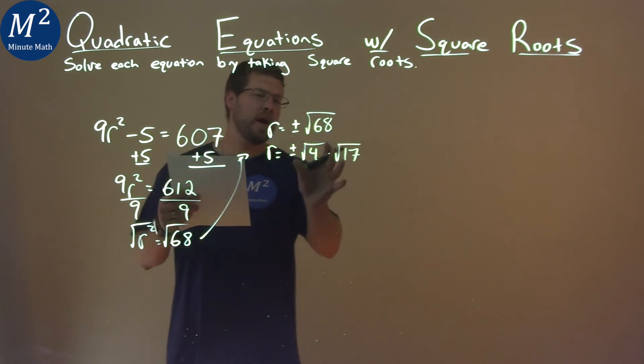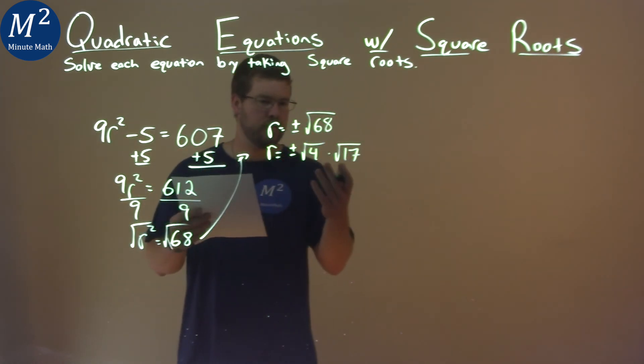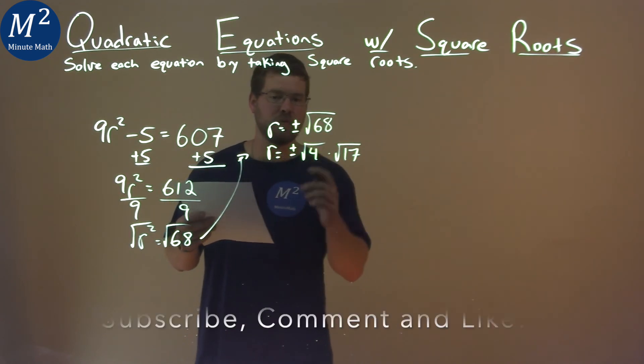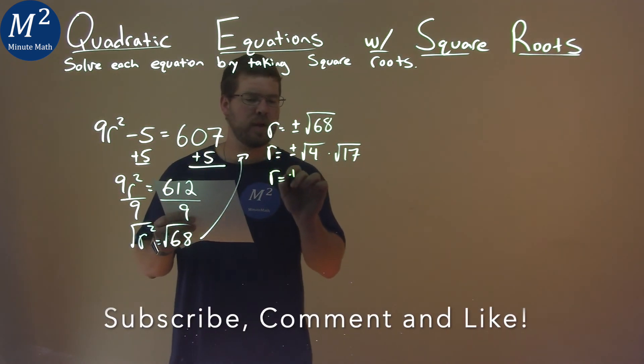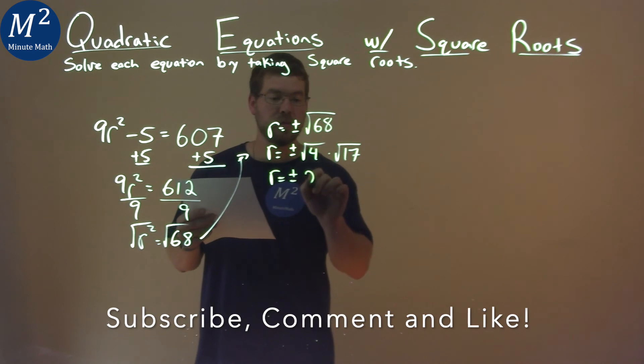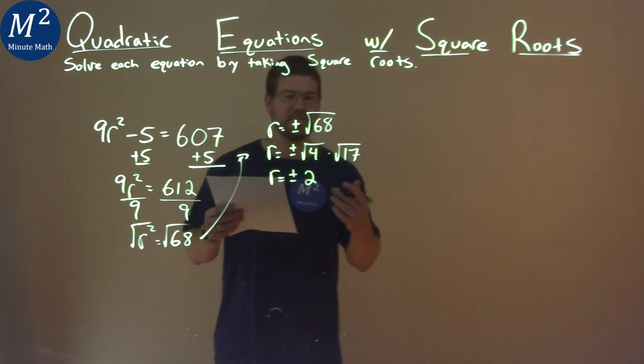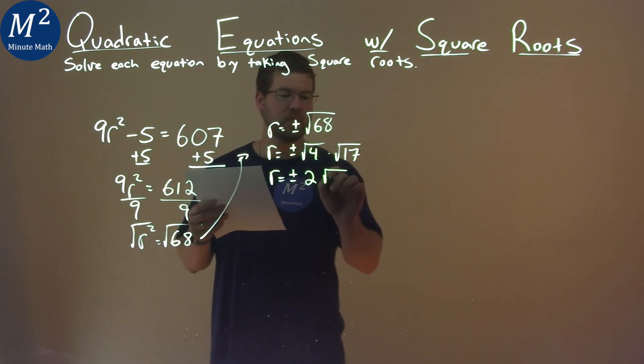And now by doing that, we broke this down into multiplication of 2 square roots, where we know we can break down the square root of 4. So r equals plus or minus, the square root of 4 is 2, and the square root of 17 actually doesn't break down anymore. So we have to leave it as the square root of 17.